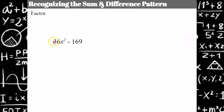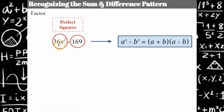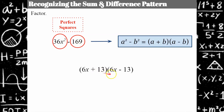Here's another one: 36x² is a perfect square and 169 is a perfect square. The square root of 36x² is 6x, and the square root of 169 is 13. So we have the sum and difference pattern, noting that the inner product and outer product form a zero pair — they are opposites — giving us the a² − b² pattern: (6x + 13)(6x − 13).